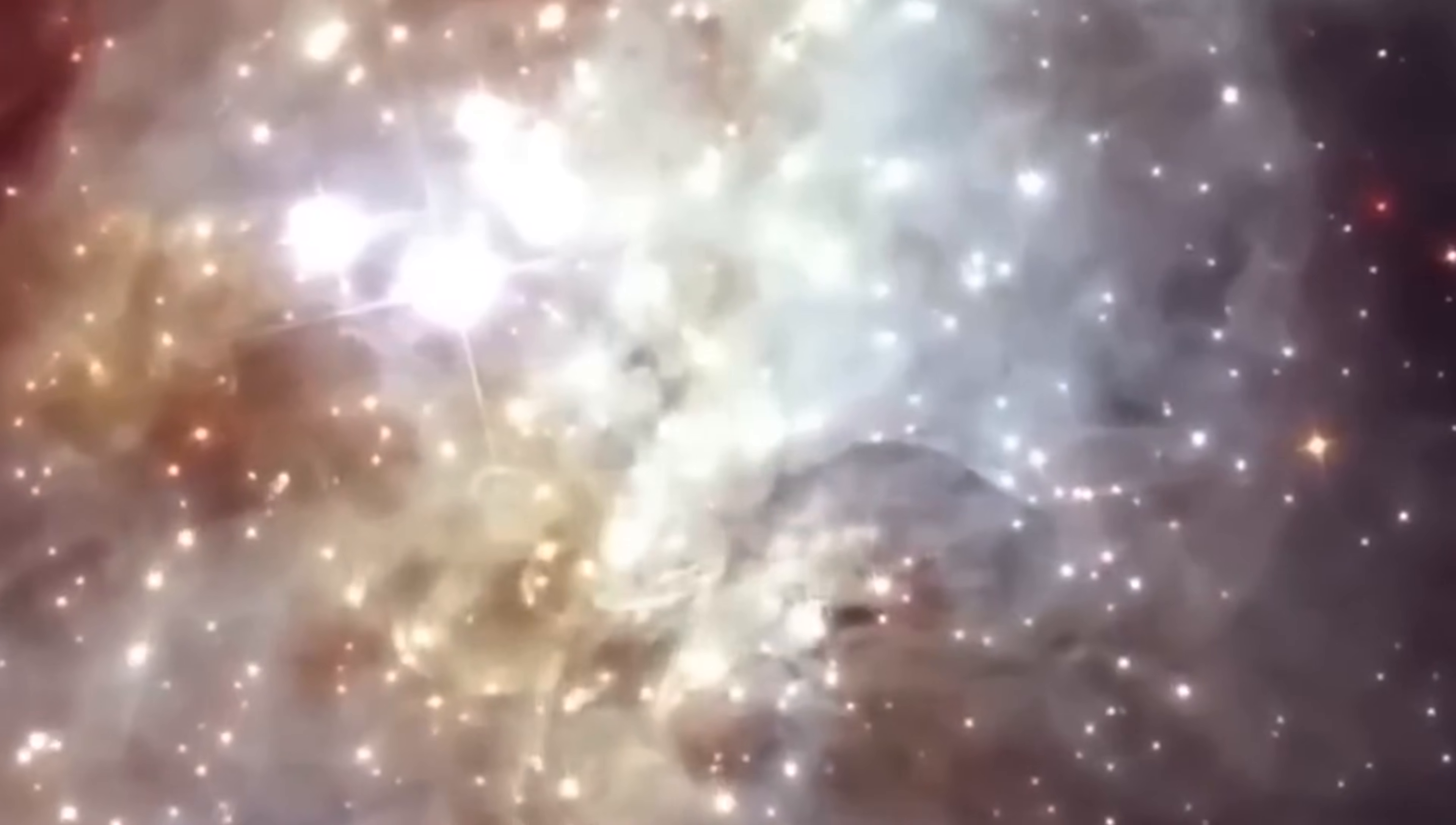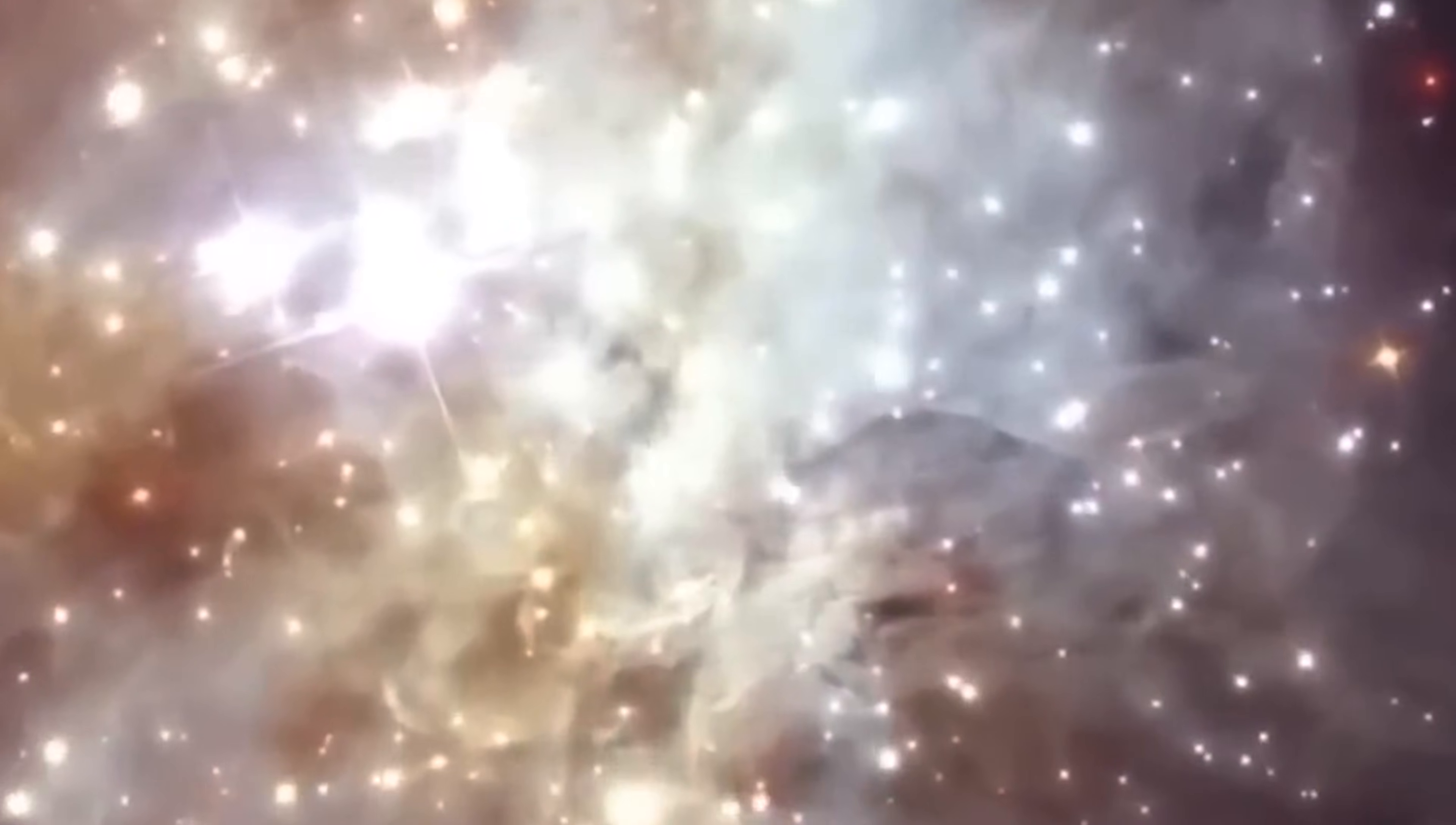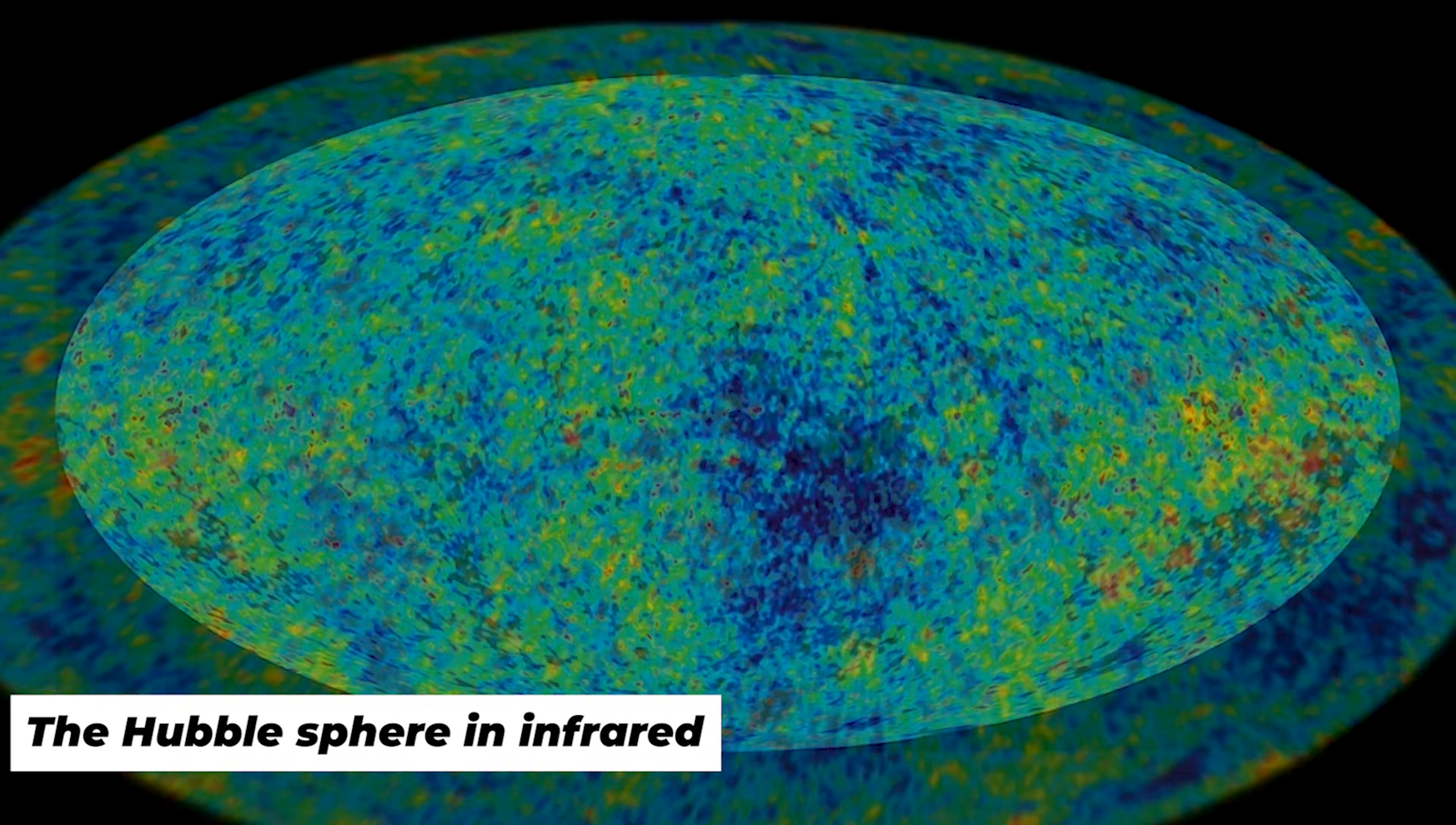The farther away a galaxy is, the faster it's moving away from us. Eventually, you reach a boundary where galaxies are receding at the speed of light. This boundary is called the Hubble Sphere. Beyond it, galaxies are moving faster than light itself. That sounds impossible, but it's not. Nothing is breaking Einstein's speed limit. It's space that's stretching, carrying galaxies along with it.